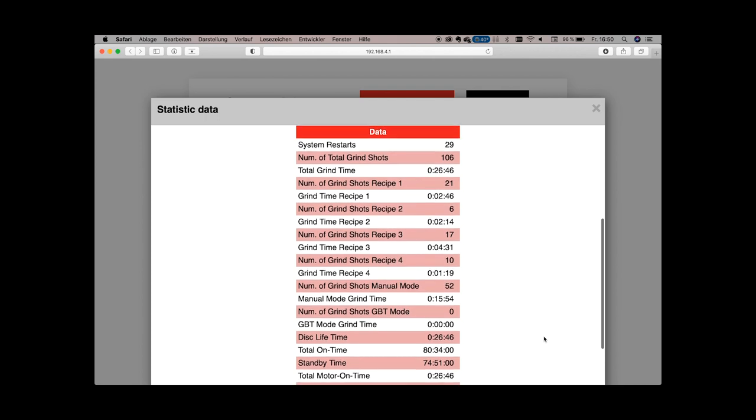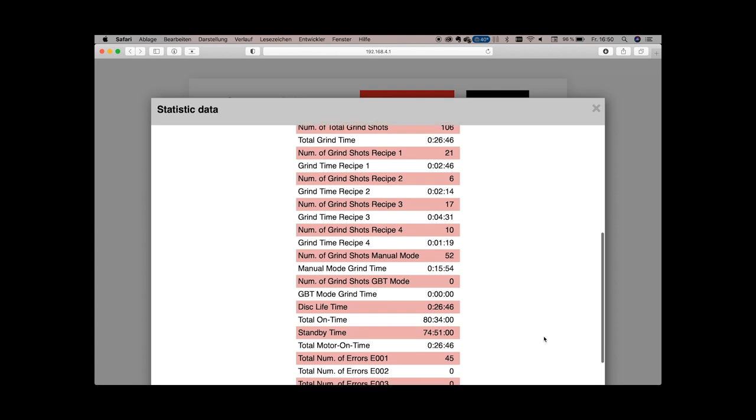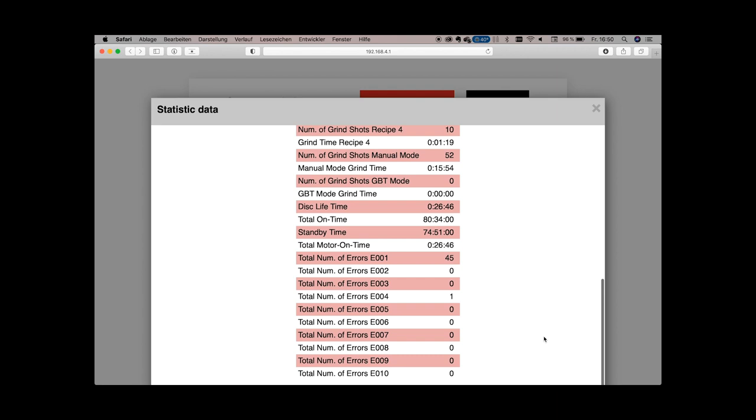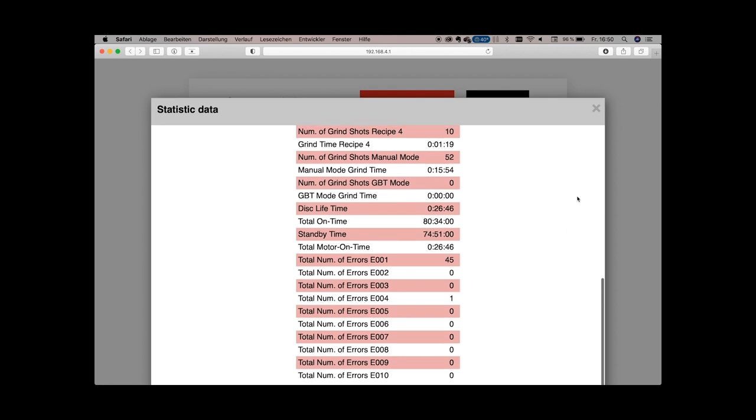You can also see the remaining disk life which I think translates into burr usage. You can also see the amount of errors. Error 001 is the missing hopper by the way.